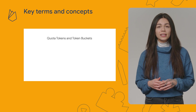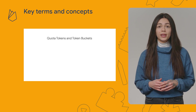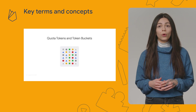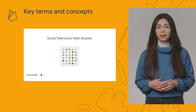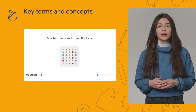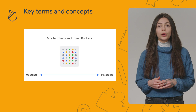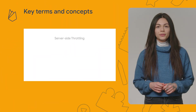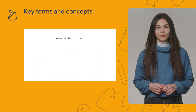When sending messages using the FCM v1 API, each request consumes what we call a quota token in a given time window. This window is what we call a token bucket.